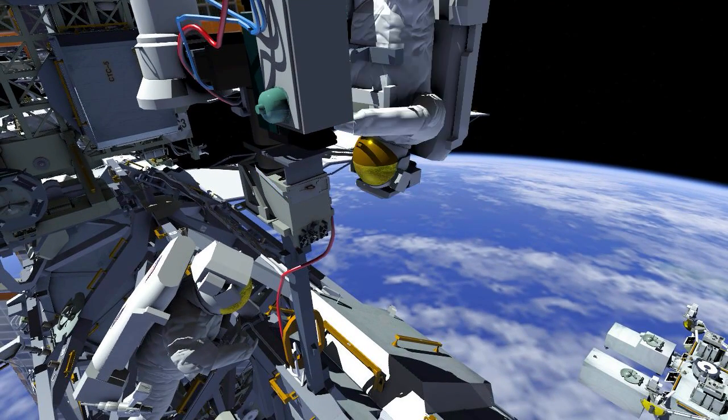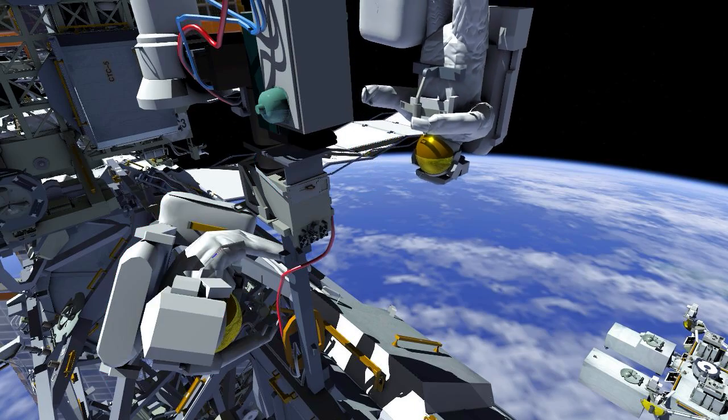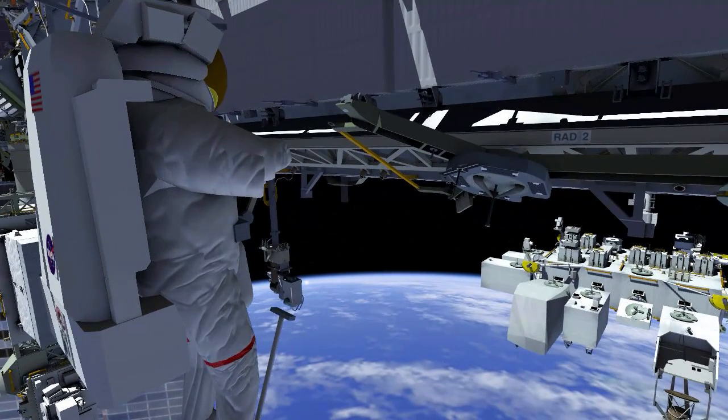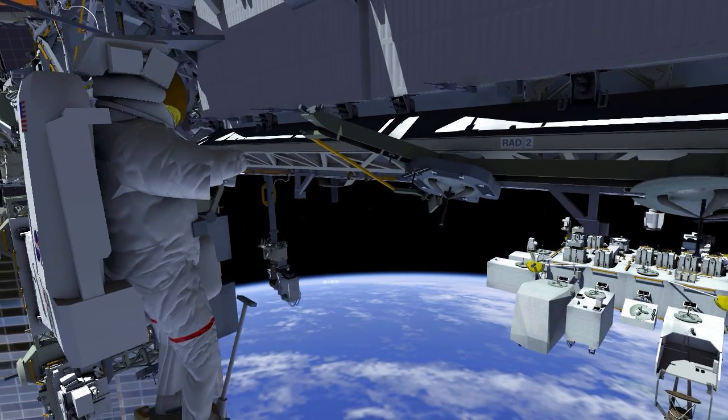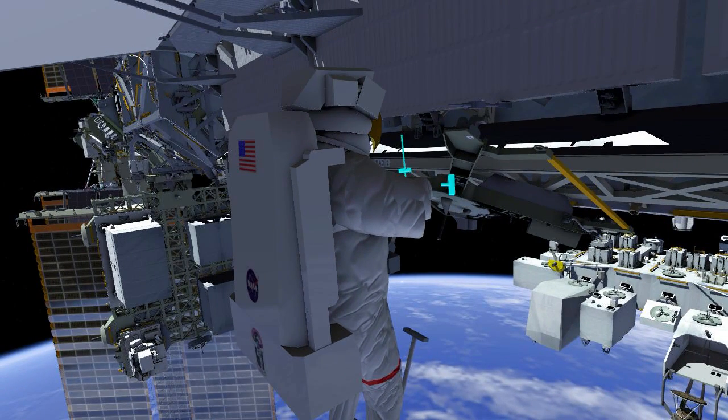After the camera change out is complete, EV1 is flown to the nader side of station to the port radiator grapple bar worksite. EV1 installs two T-handle tools, which will allow the radiator grapple bar to be used in future EVAs.